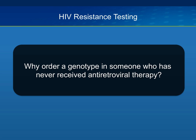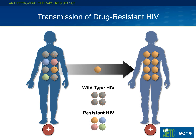One question that comes up is why should we order a genotype in someone who's never received antiretroviral therapy? If they've never been on therapy, why would they have developed resistance? Conceptually, what everyone should understand is that people can transmit drug-resistant virus. An individual may have a mixture of wild-type HIV and resistant strains, and at the time they pass on their virus they may pass on a resistant or even multi-resistant strain. So even though the newly infected individual has never been on antiretroviral therapy, they may have acquired a drug-resistant strain — that's the intuitive reason for resistance testing in treatment-naive patients.